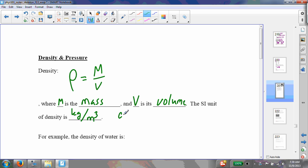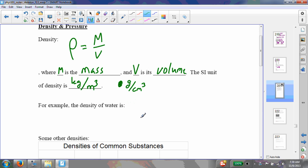But sometimes you'll also see it in grams per cubic centimeter, which is a common unit for density. In fact, the density of water is often expressed this way. The density of water is one gram per cubic centimeter.